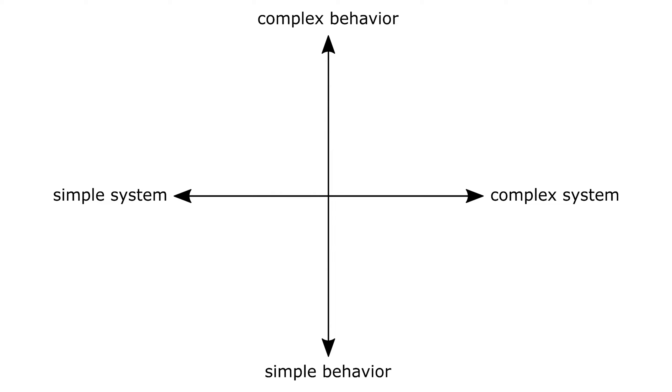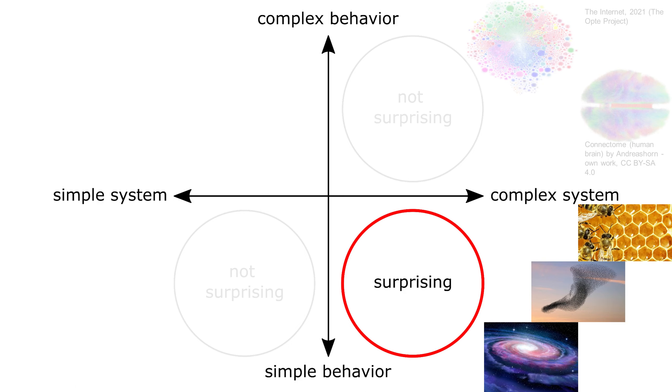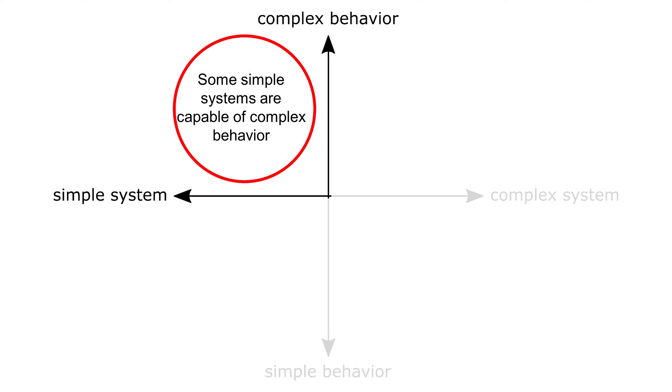I like to think of complexity as a continuum, ranging from simple to complex. We can apply this continuum to various systems and also to the behaviors they demonstrate. It isn't too surprising that there are some simple systems that behave in fairly simple, straightforward ways, and some complex systems exhibit complex behavior. What might be more interesting is that some remarkably complex systems demonstrate surprisingly simple behavior, and likewise, some simple systems demonstrate surprisingly complex behavior, including chaos. This last quadrant is where our focus will be for this video.